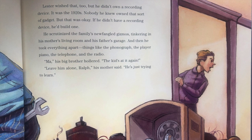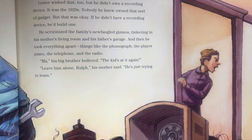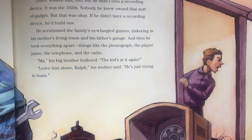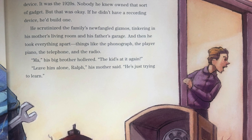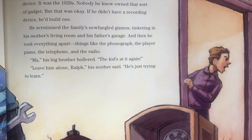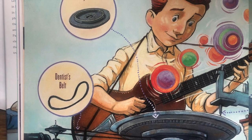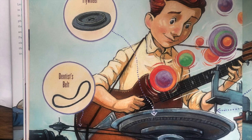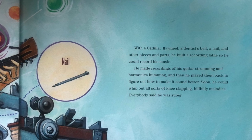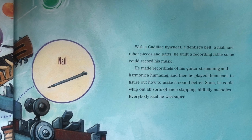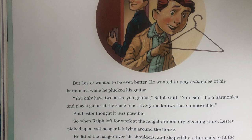He scrutinized the family's new-fangled gizmos, tinkering in his mother's living room and his father's garage. And then he took everything apart — things like the phonograph, the player piano, the telephone, and the radio. "Ma," his big brother hollered, "the kid's at it again." "Leave him alone, Ralph," his mother said. "He's just trying to learn." With a Cadillac flywheel, a dentist's belt, a nail, and other pieces and parts, he built a recording lathe so he could record his music. He made recordings of his guitar strumming and harmonica humming, and then played them back to figure out how to make it sound better. Soon he could whip out all sorts of knee-slapping hillbilly melodies. Everybody said he was super. But Lester wanted to be even better.